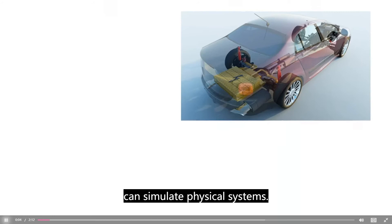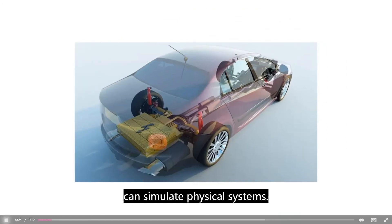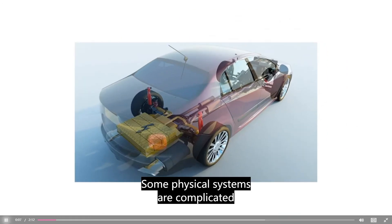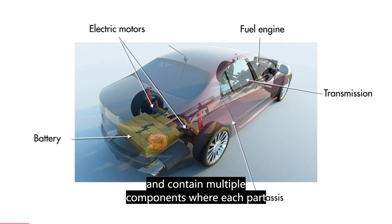Simulink is a numerical simulation tool that can simulate physical systems. Some physical systems are complicated and contain multiple components, where each part itself is also an individual system.